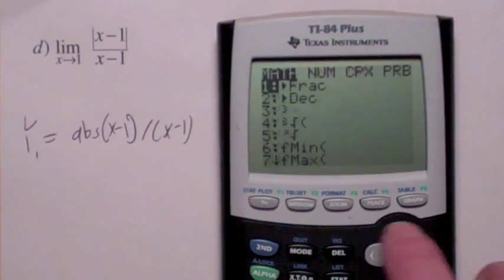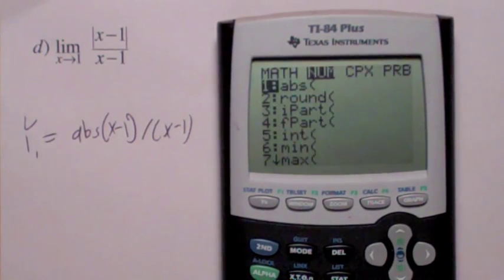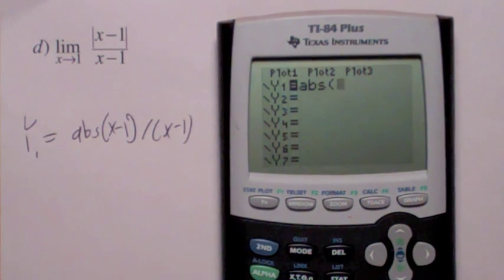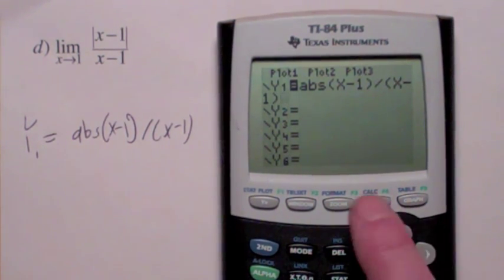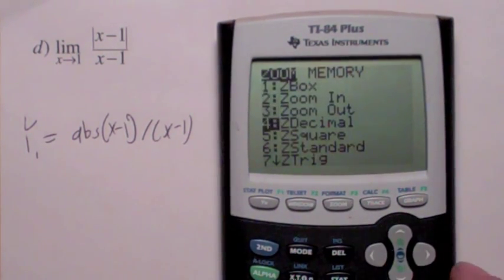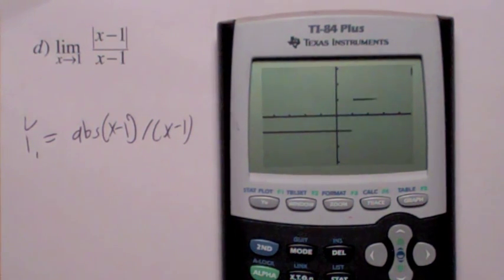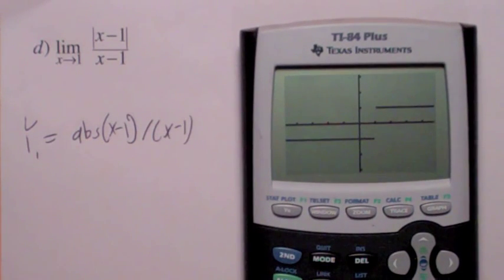Well, you go second, it's under math, over to num. Abs of parentheses x minus 1 divided by parentheses x minus 1. Zoom decimal. Let's see what happens there. Let's see, folks, would you say this limit exists? No, it doesn't. The reason why it doesn't is because they don't agree. Both sides have to agree. Remember, part of the definition.